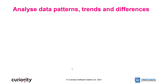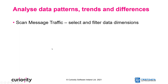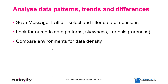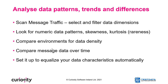Let's move on to the next part of the demo, which is analyzing data patterns, trends, and looking for differences. We're going to scan the message traffic, select and filter data dimensions, and look for numeric data patterns — skewness, kurtosis (which is rareness). We can compare environments for data density, compare message data over time, and set it up to equalize data characteristics from production automatically into development.